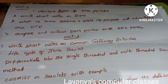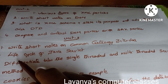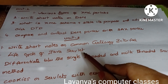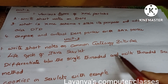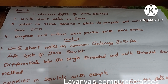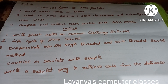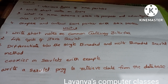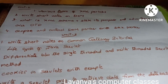Unit 3: write short notes on common gateway interface CGI. Next, explain the life cycle of JavaScript. Next, differentiate between single threaded and multi threaded servlet method and explain cookies on servlets with example. Last question is write a servlet program to retrieve data from the database.